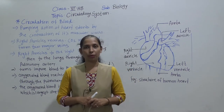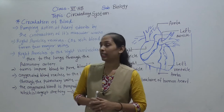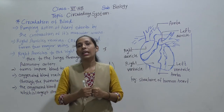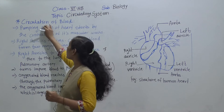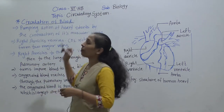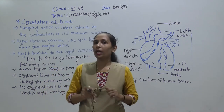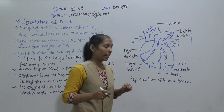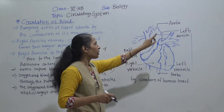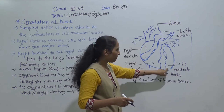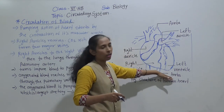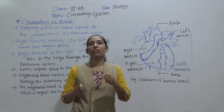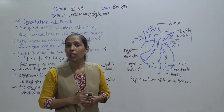Hello dear students, good afternoon and welcome to our biology session. We are discussing the circulatory system, and today we have reached the most important point: the circulation of blood — how exactly blood circulation happens in our body. Before the discussion, let me again identify the different parts of the heart: right auricle, right ventricle, left auricle, left ventricle, and the aorta.